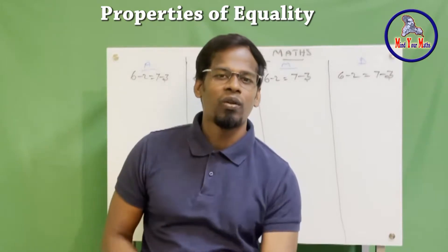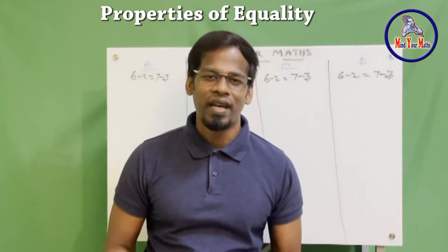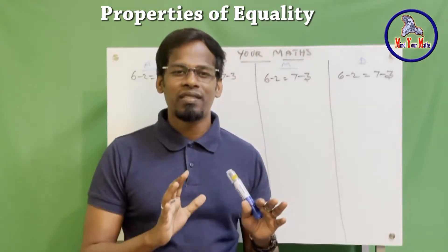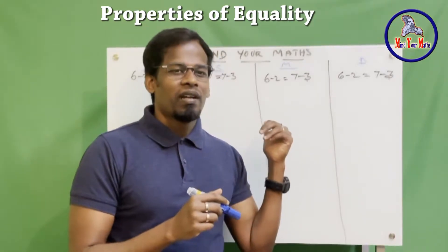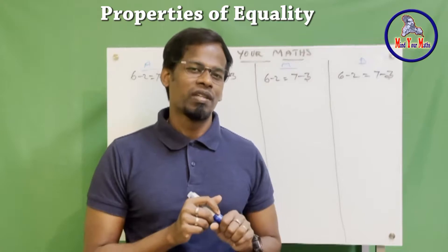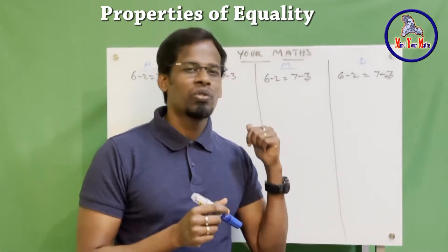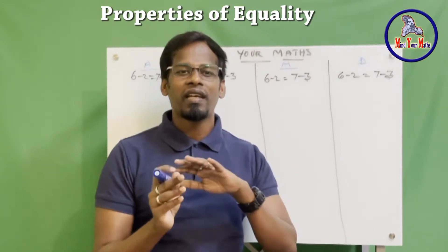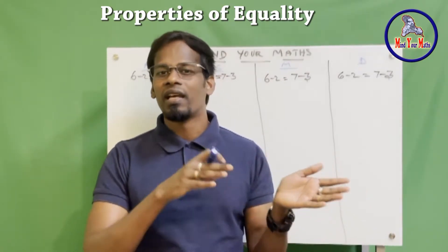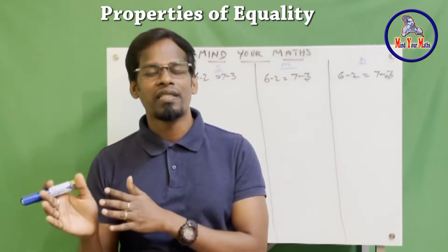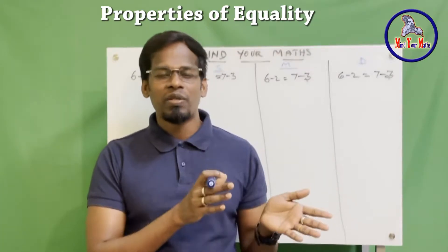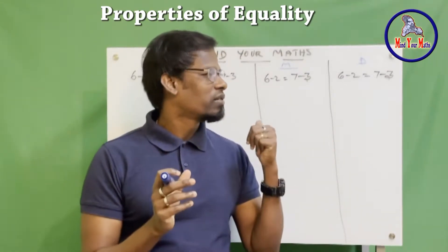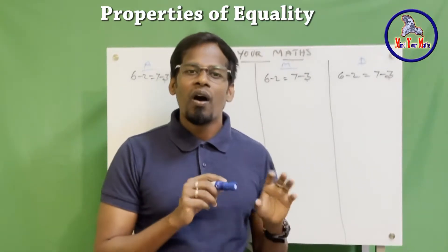Now let's see this in a practical way so that you will understand more. In the early primary 3, 4, 5 and all those years, this is where students get more confused. This is for those who are getting confused about how it is done — like adding the same value on the left side as well as the right side, or subtracting or multiplying or dividing on both sides.